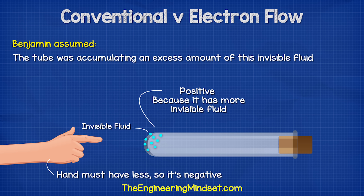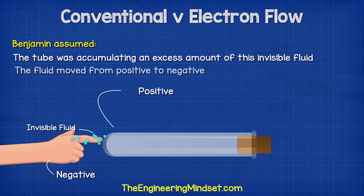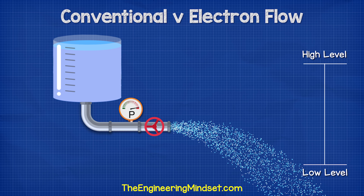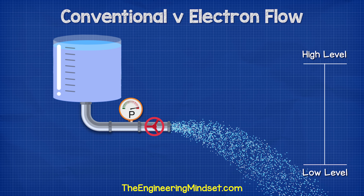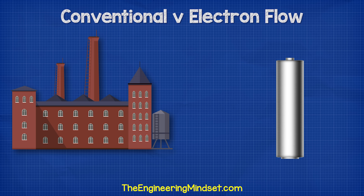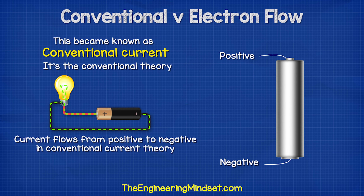Benjamin Franklin assumed that the tube was accumulating an excess amount of this invisible fluid, so he considered this to be positive, and the person touching it must have less of this fluid, so they were considered negative. He said this end is positive and this end is negative, and electricity flows from positive to negative. This does make sense, because water is a fluid and it flows from a high level to a low level. Soon, manufacturers started producing batteries based on his work, and so they also said this end is positive and this end is negative. We still use this naming convention to this day. This became known as conventional current, because it's the conventional theory of how electricity flows.